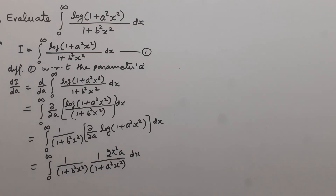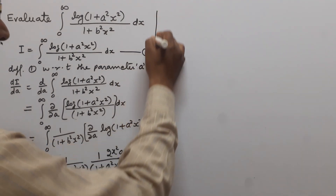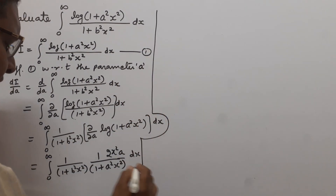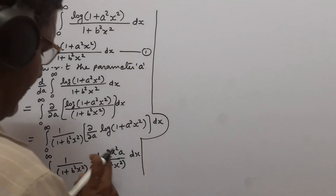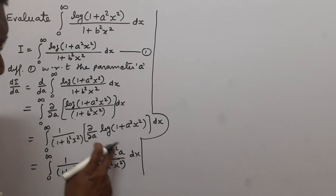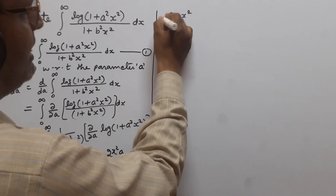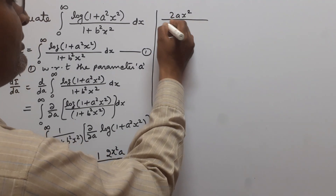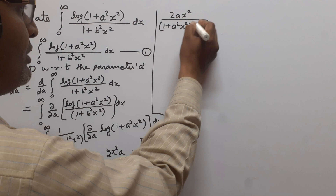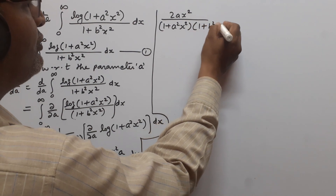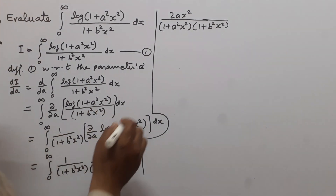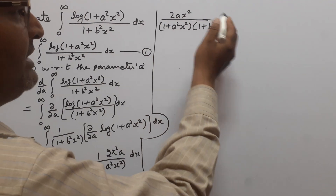So we get dI/da equals the integral from 0 to infinity of 2ax² divided by (1 + a²x²)(1 + b²x²) dx. To integrate this, we first perform partial fractions on 2ax² divided by (1 + a²x²)(1 + b²x²).